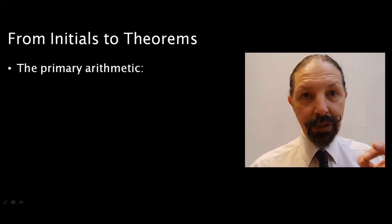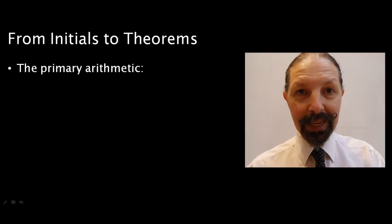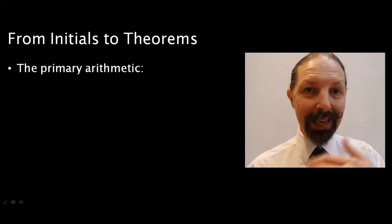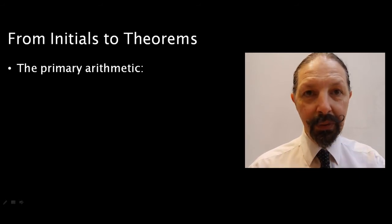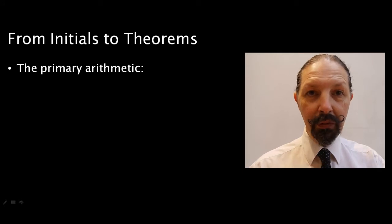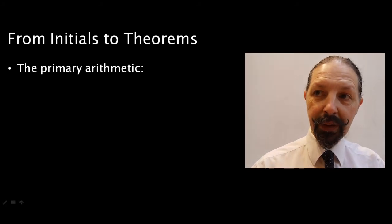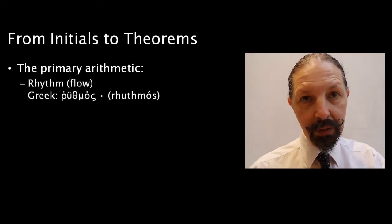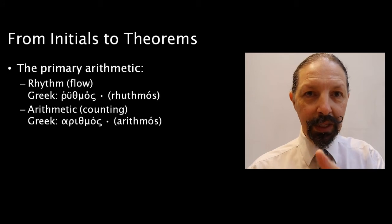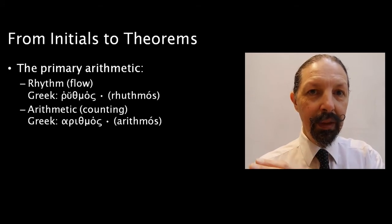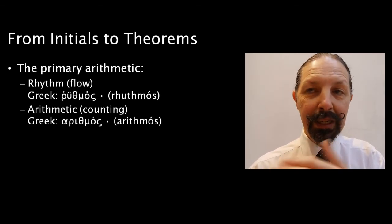Now, Spencer Brown uses those initials to build theorems in what he calls the primary arithmetic. From those very simple beginnings, he builds a whole system, a calculus of indications that you can use to work things out with. But at this point, it's useful to stop and reflect on the origins of the word arithmetic. If we go back to ancient Greece, we have rithmos, which means flow, and arithmos, which means counting. There's a sense of there being a brokenness to it, a start and a stop, that goes alongside the flow, or breaks it. One is dependent on the other.